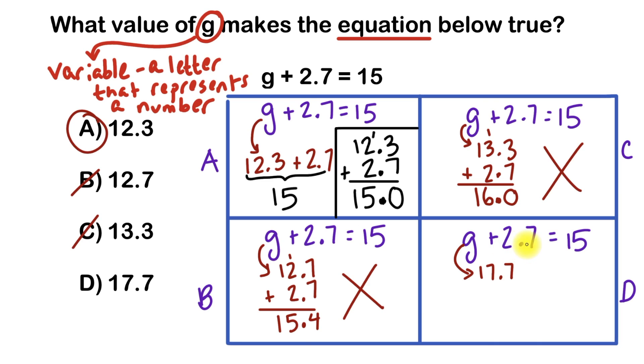I'll use the decimal point to line my place values up. I'll put my decimal point here. I'll put this 7 directly next to the decimal point under this 7. And I'll put the 2 directly next to the decimal point on this side under this 7 here, 17. Then I'll put a plus sign.